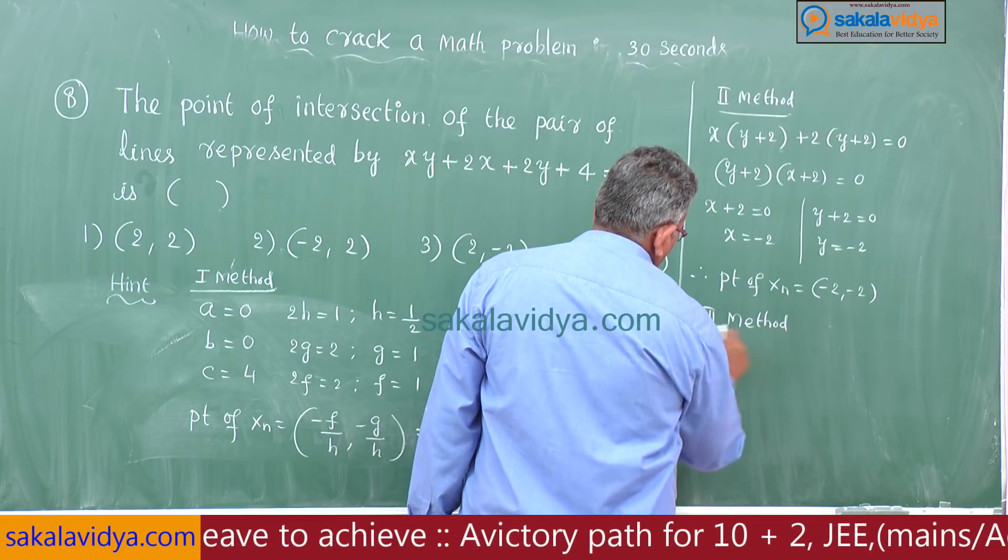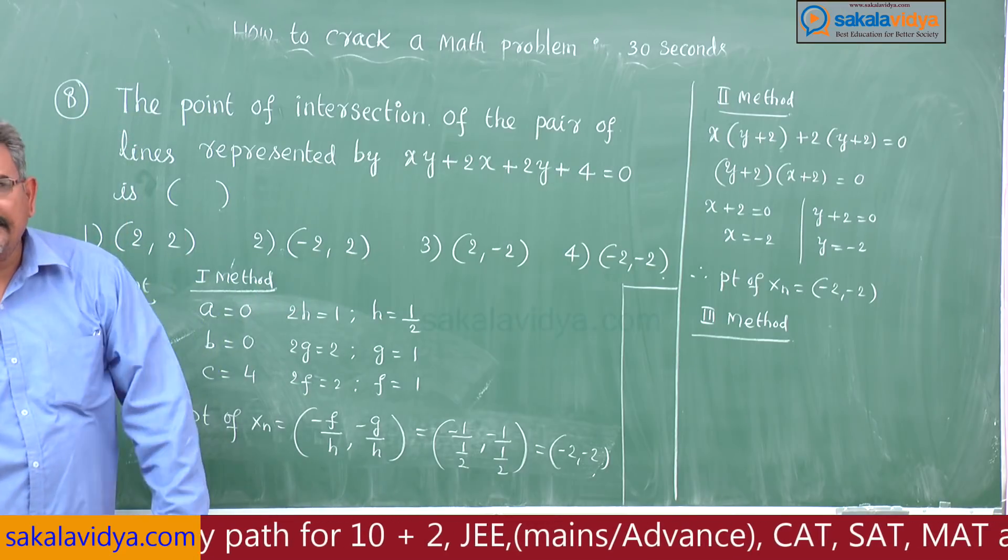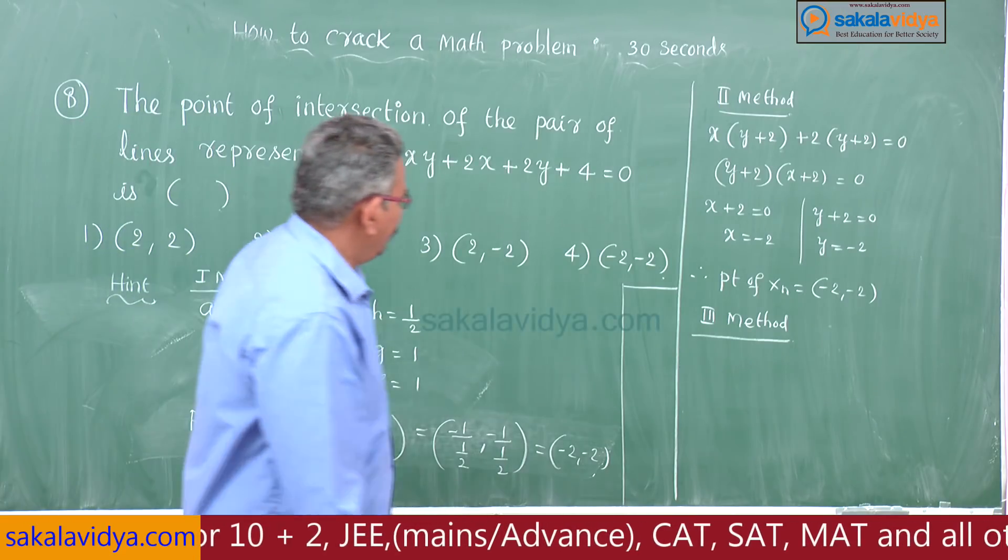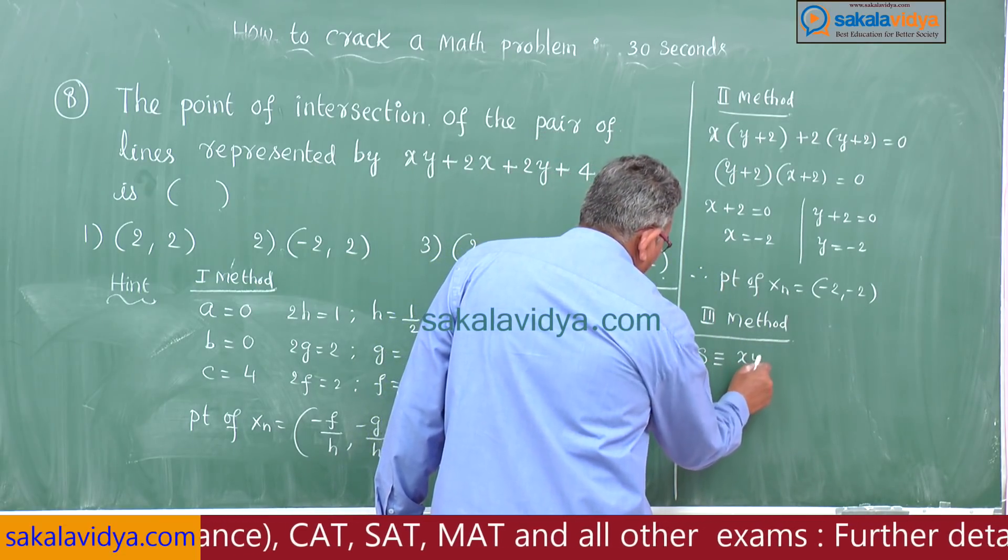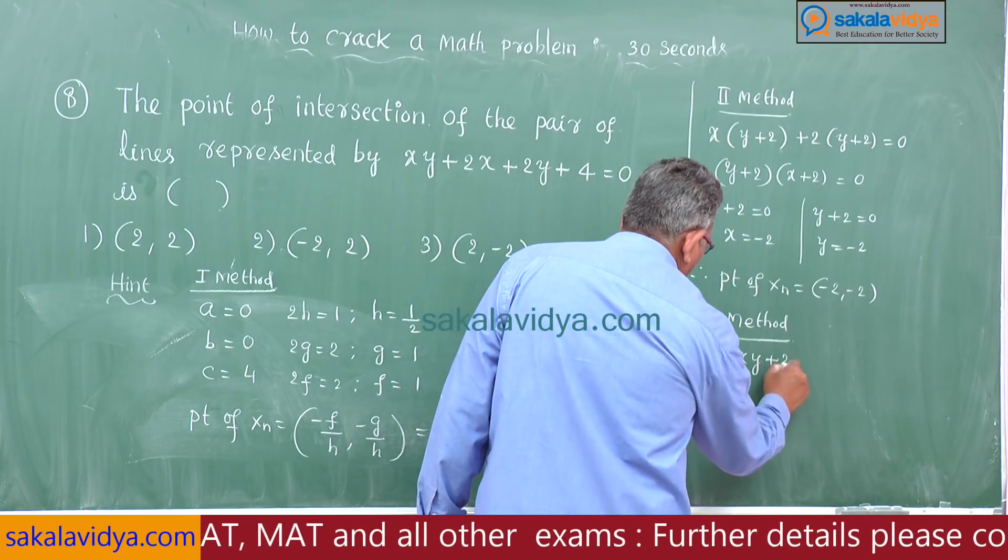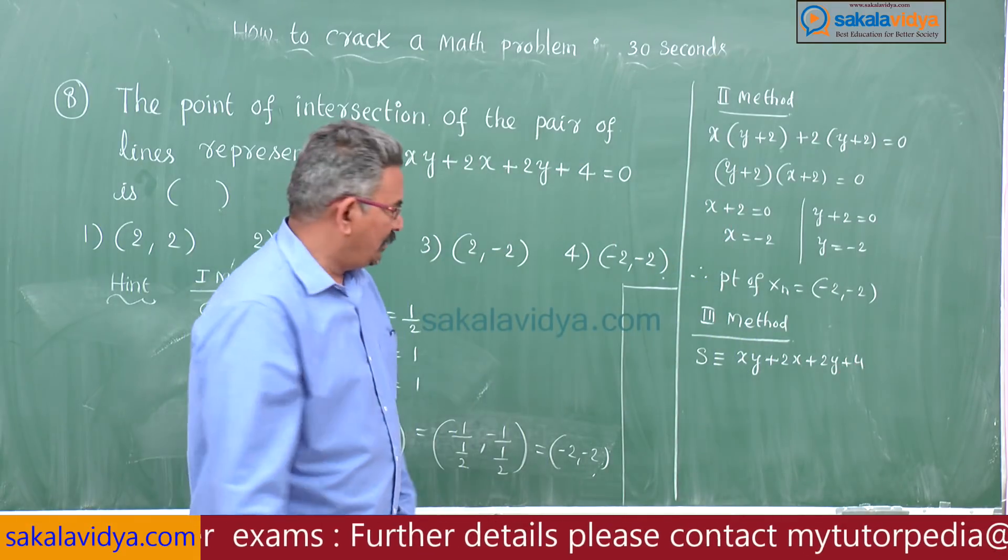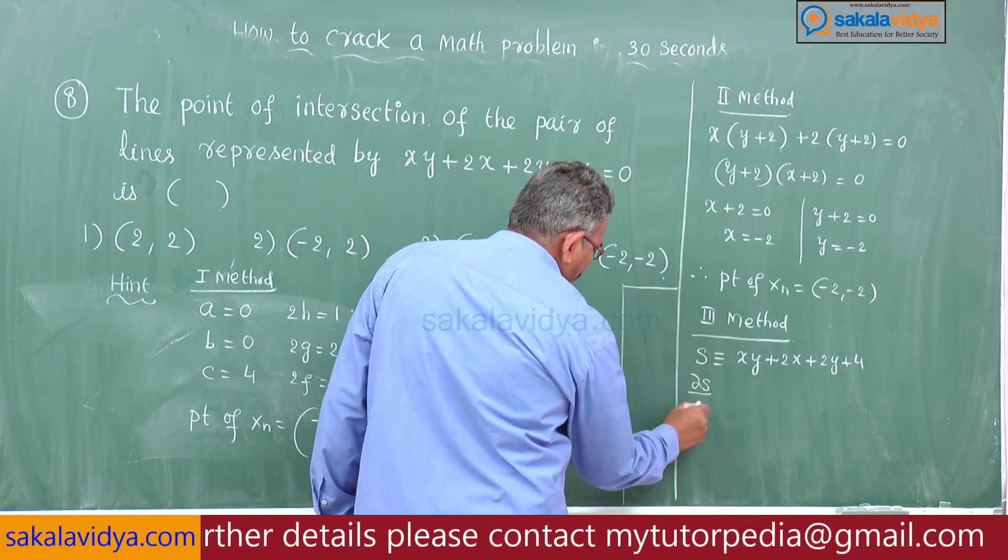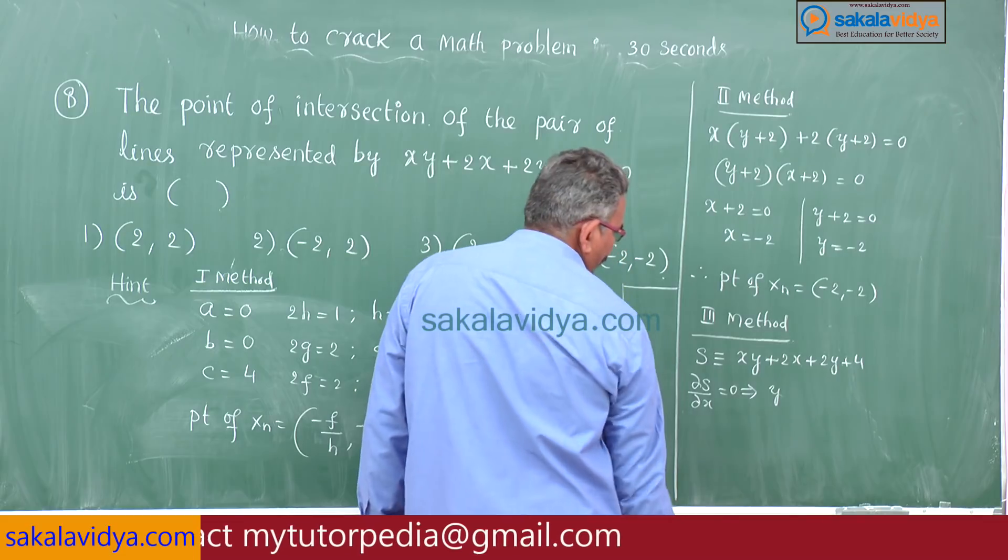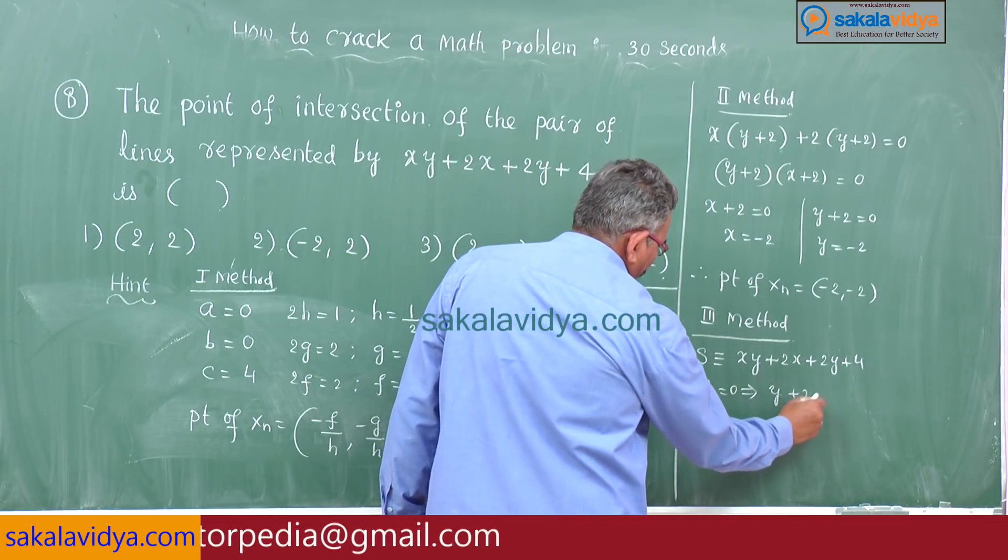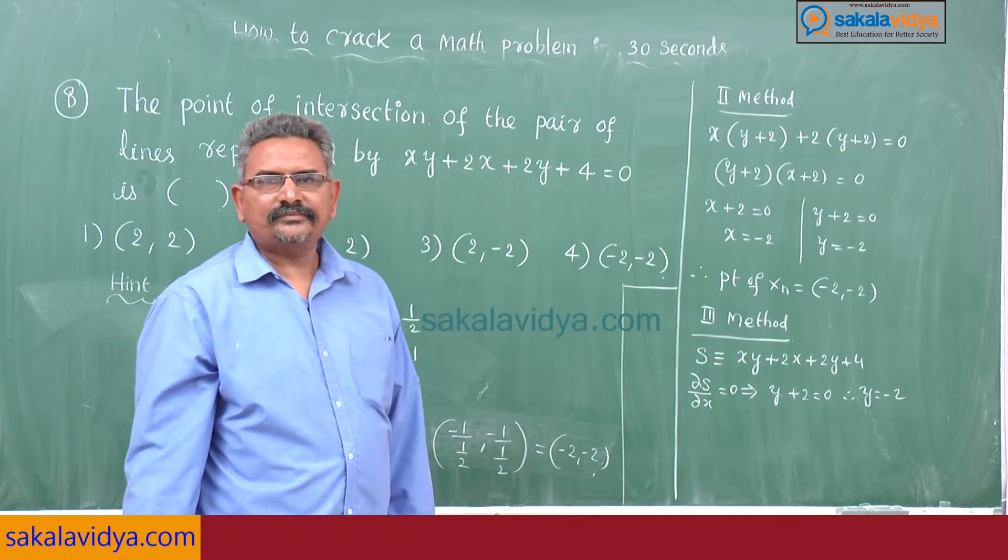Third method: whatever method you like can be adopted in the examination. Let S is equal to xy plus 2x plus 2y plus 4. First ∂S/∂x is equal to 0. What you will get? y plus 2 is equal to 0. Therefore y is equal to minus 2.